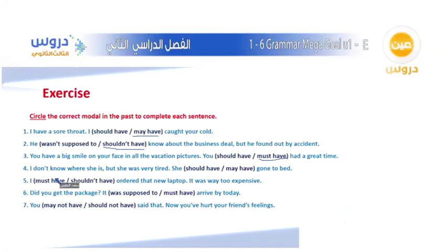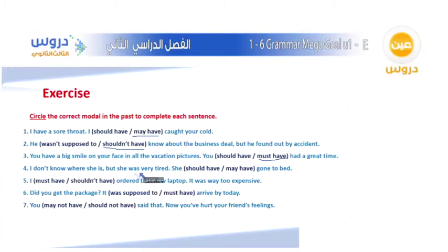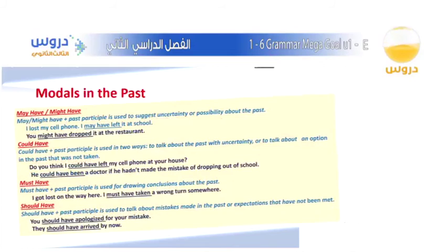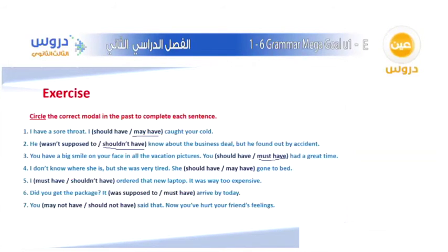Number four: I don't know where she is, but she was very tired — she should have or may have gone to bed. This expresses possibility about the past. With possibility, we use may have or might have. The answer is may have.